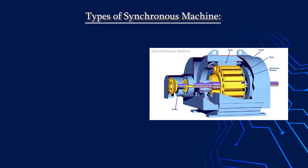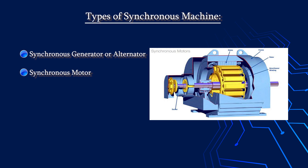Types of synchronous machines: we have synchronous generators, which convert mechanical power to electrical power, also known as alternators. Then we have synchronous motors, which convert electrical energy to mechanical energy. And synchronous condensers, which are special synchronous motors that also work for power factor improvement.